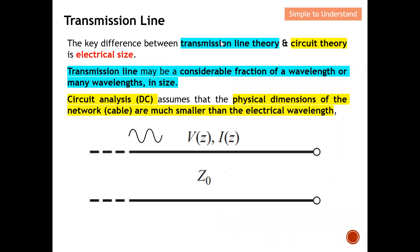Let's start by quickly understanding the key difference between transmission line theory and circuit theory. Between these two, the key difference will be the electrical size. Circuit theory will have the longer wavelength, while transmission lines basically have a very short wavelength because of high frequency.